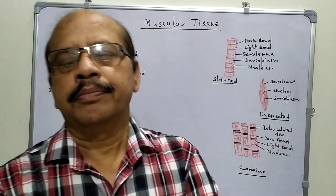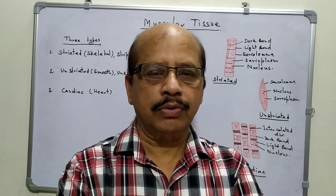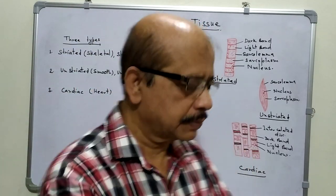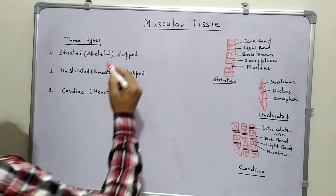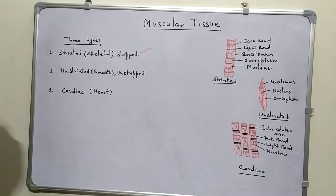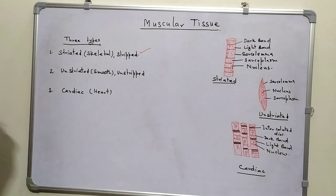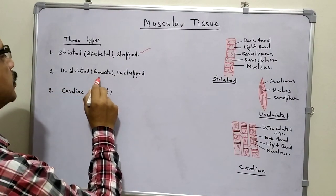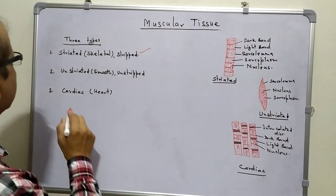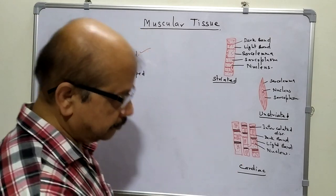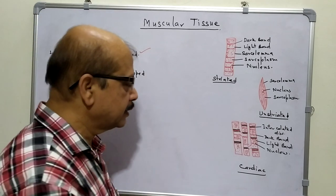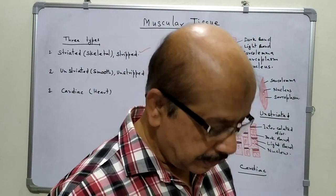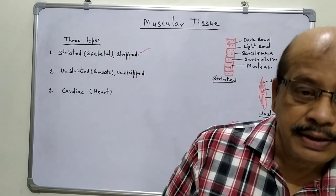Because of the presence of muscles, these tissues are known as muscular tissues. These tissues are of three types. First is striated, or skeletal muscles, or striped muscles. Second is unstriated, or smooth, or unstriped muscles. And the third one is cardiac muscles. As the name indicates, cardiac muscle is present only in the heart. Now one by one we will discuss the structure and function of these three muscles.